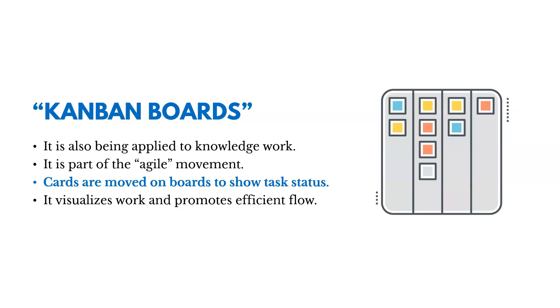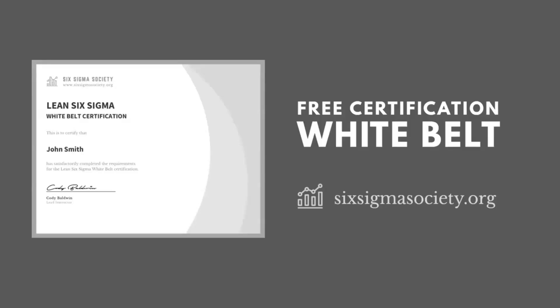Oftentimes in Kanban boards — not always — you have a column that shows what's not started, what work is in process, and what's been complete. Thanks for watching. If you're interested in learning more, don't forget to check out the free Lean Six Sigma certification course at SixSigmaSociety.org.